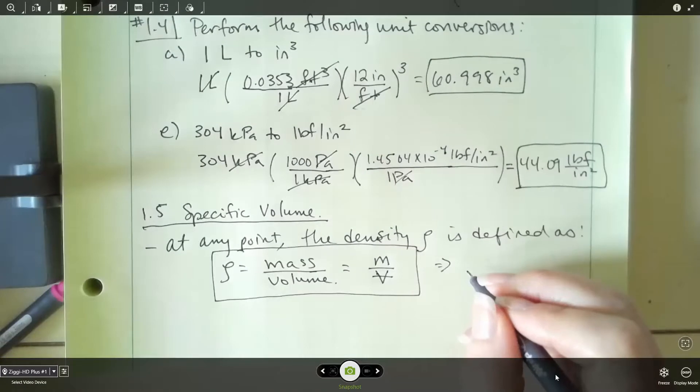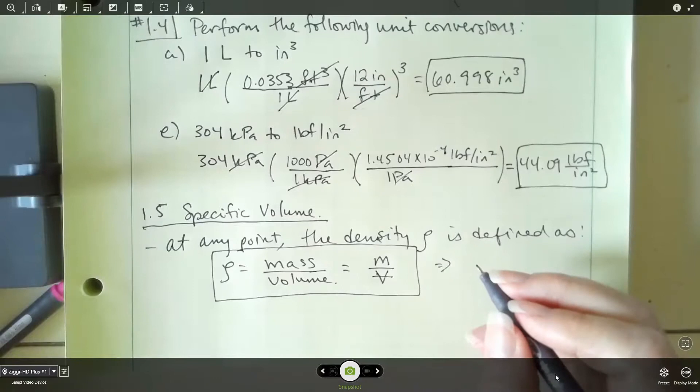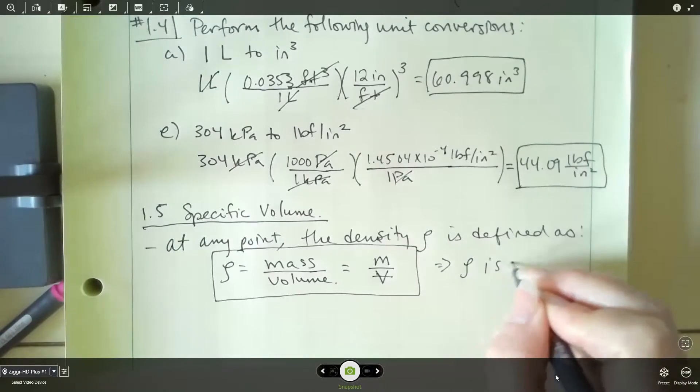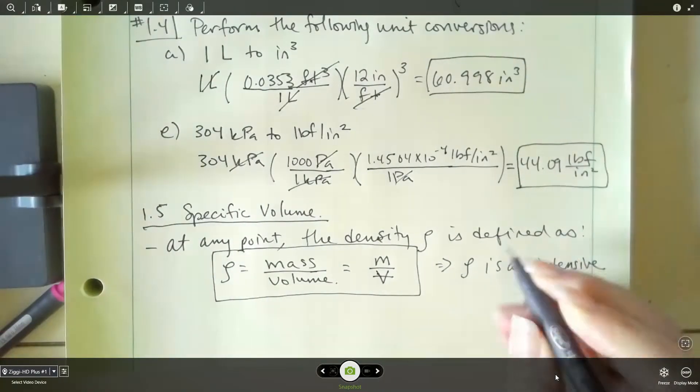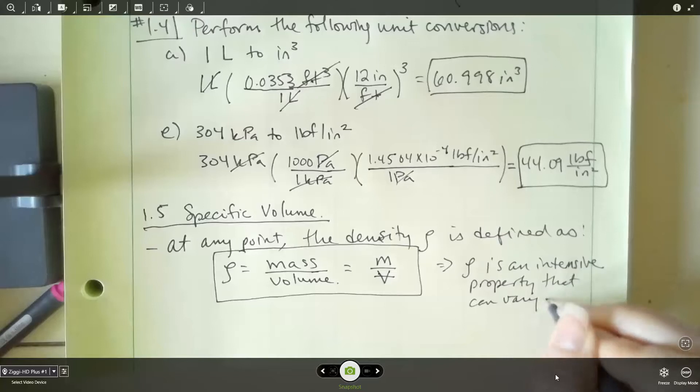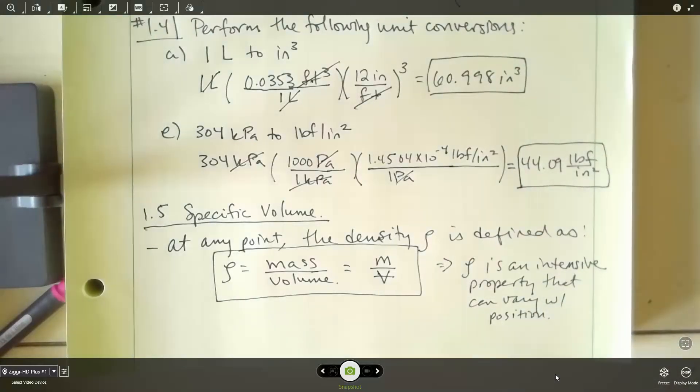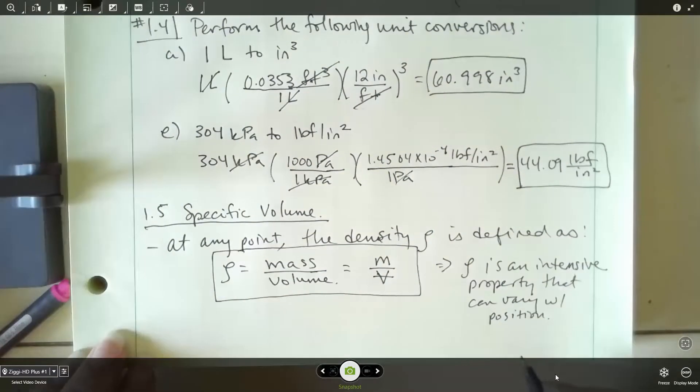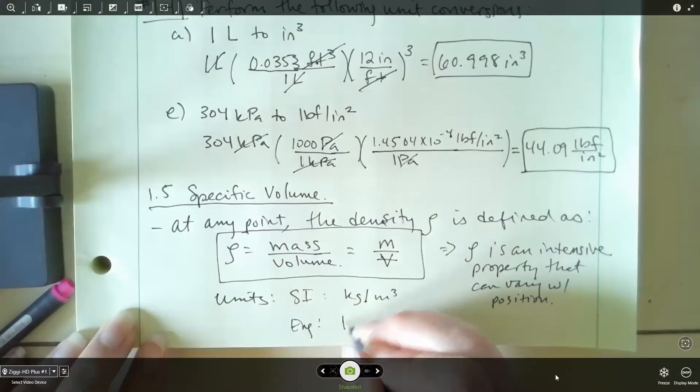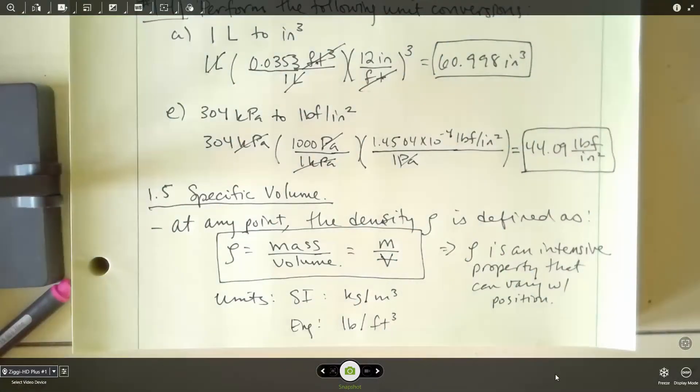So a gas would have less density than something, say, like mercury. Mercury is very dense. So you're going to have a higher density. And rho is an intensive property that can vary with position. Now we've got our units. Let's look at that. So in the SI system, remember, we're doing mass per volume. So for SI, we're going to have kilograms per cubic meter. And then in the English system, we're going to have pound mass per cubic feet. So those are going to be our units for density.